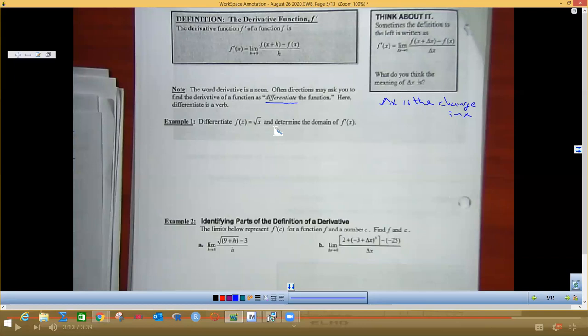So we want to do the differentiation or do the derivative of f of x equals the square root of x to determine the domain. So what we need to do is we are going to say f of x equals this radical x, so that is this part, so we need to know that f of x plus h is going to equal the square root of x plus h.